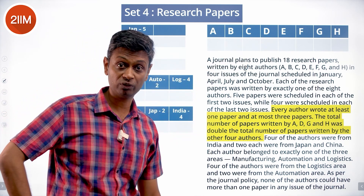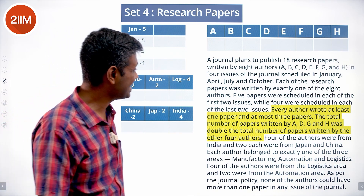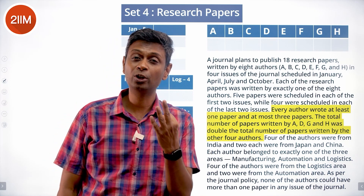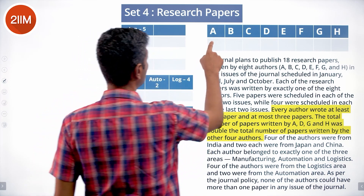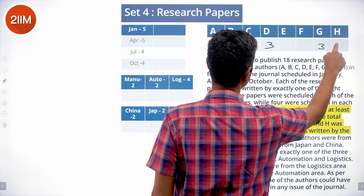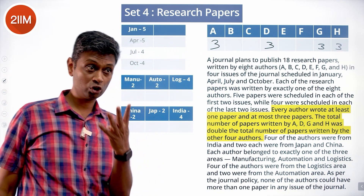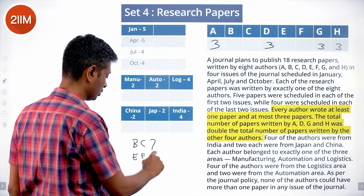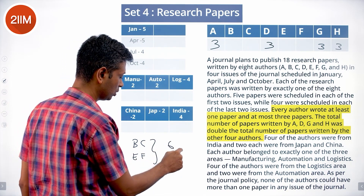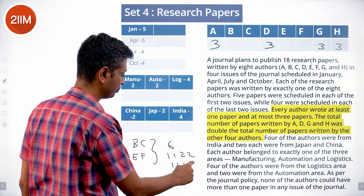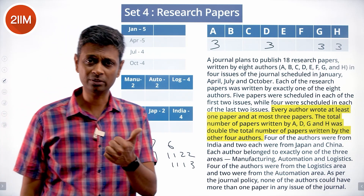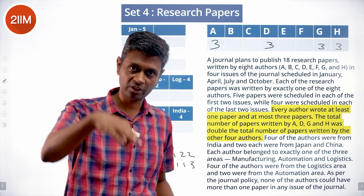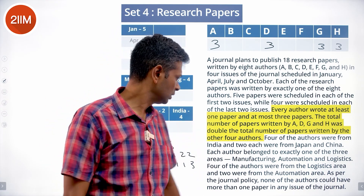As per journal policy, none of the authors could have more than one paper in any issue. So A cannot publish three articles in the same issue. Now B, C, E, F together is six — so it is either 1,1,2,2 or 1,1,1,3. Each should have at least one. The two extra could be distributed as two-two or to the same person as one, one, one, three.